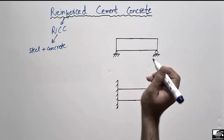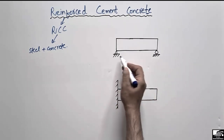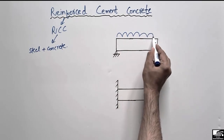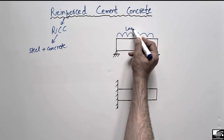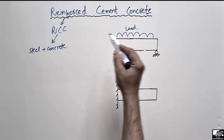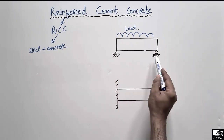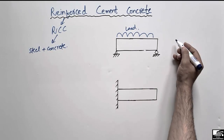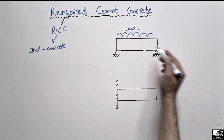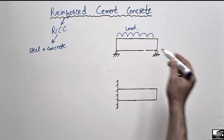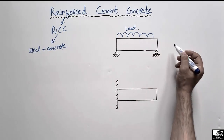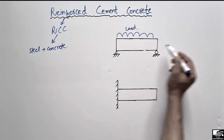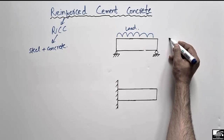I will explain this with the help of an example. Consider this is a simply supported beam, and when there is a uniformly distributed load acting on this beam, if I draw the bending shape of this beam under loading, it will look like this.